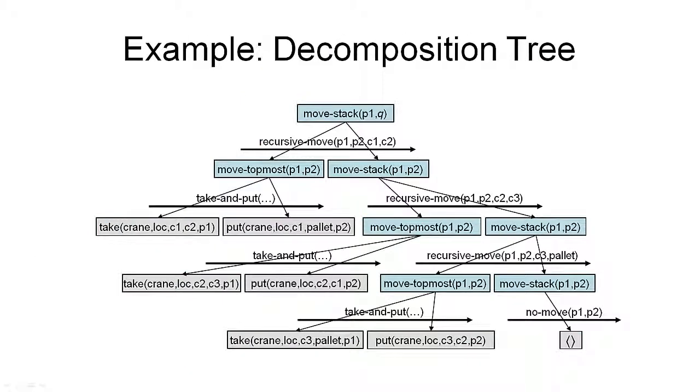In the second half of this week, we're going to do something completely different. Namely, we're going to change the planning problem that we are trying to solve. So far, our planning problems consisted of, amongst other things, a goal which defines a set of goal states. In the new type of planning we're going to look at here, we're not trying to achieve goals, but we're trying to accomplish tasks.